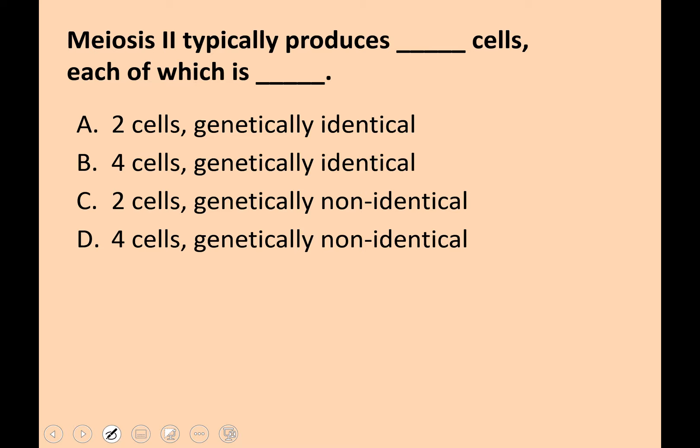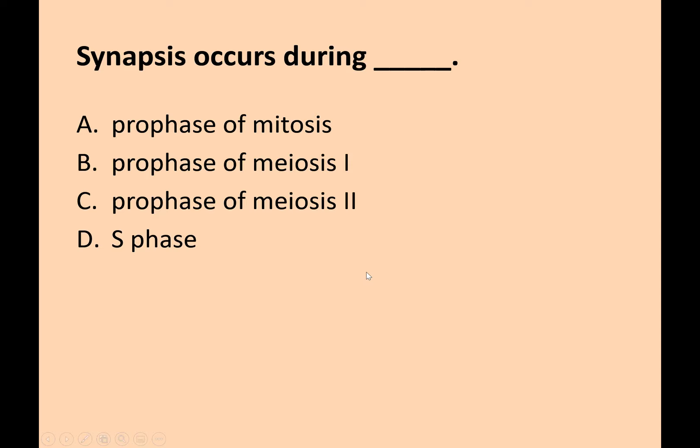Let's test yourself: meiosis II typically produces blank cells, each of which is blank. The answer: four cells, genetically non-identical. Synapsis occurs when? During prophase of meiosis I.